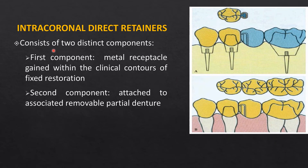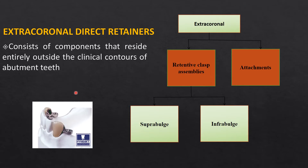The precision attachment consists of two portions: first, a metal receptacle; second, a male/female or tenon/mortise portion attached to the removable partial denture. Extra-coronal retainers are placed outside the body of the tooth and are classified as supra-bulge or infra-bulge clasps — these are our conventional clasp assemblies cast from a wax pattern. There are also attachments placed outside the crown: the female portion is external to the crown, and the male portion is attached to the denture base and seats into the receptacle.